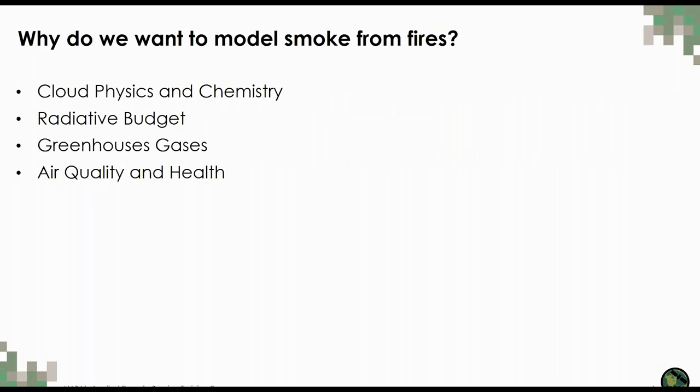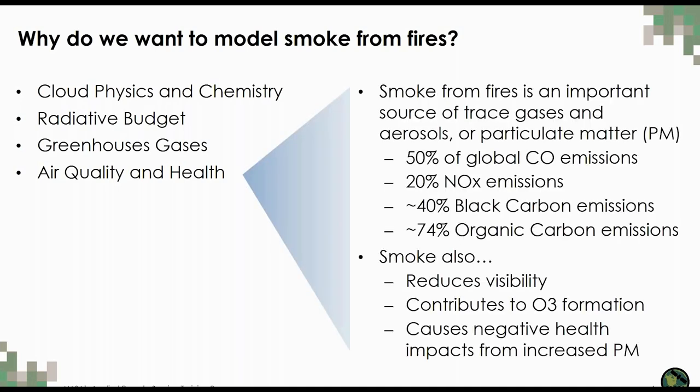First, we're going to talk about why we want to model smoke from fires. Fires and the smoke that results can have a wide variety of important impacts. Smoke particles can affect the Earth's energy budget — smoke can scatter and absorb radiation and also alter the properties of clouds and their lifetimes. Forests are usually sinks of carbon, meaning they take in more CO2 than they release. Carbon is taken up through photosynthesis and stored within plants, dead organic matter, and soils. However, when large areas are burned, forests can become a carbon source.